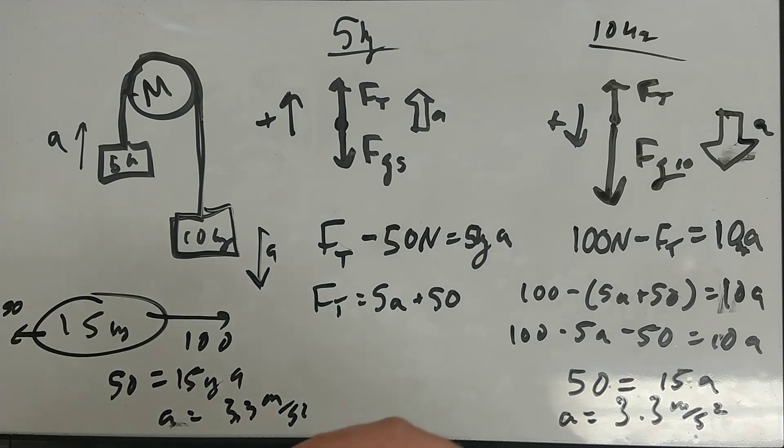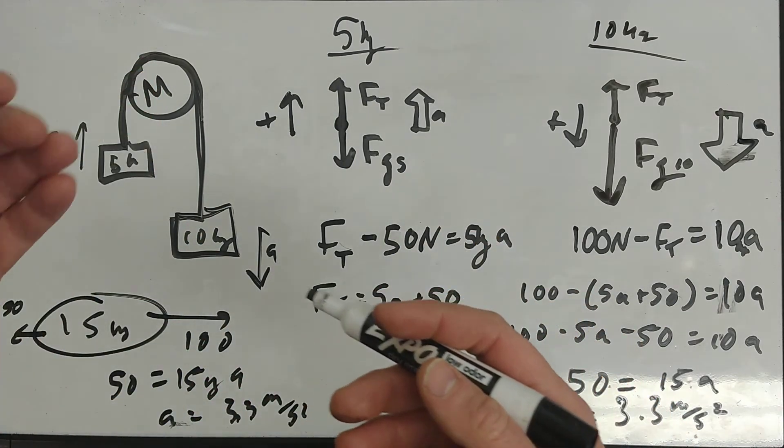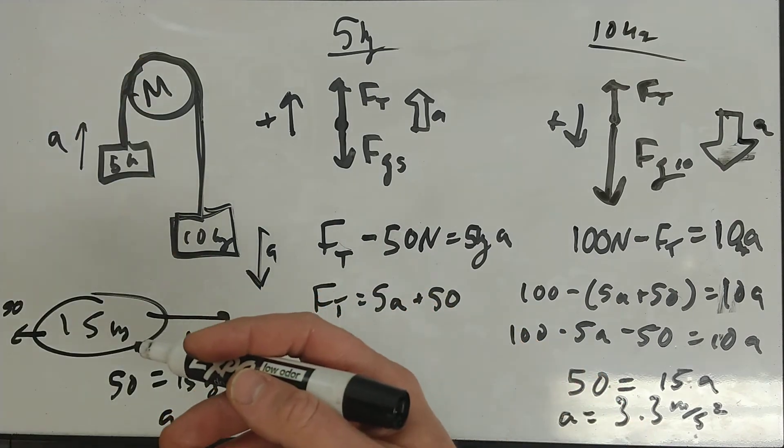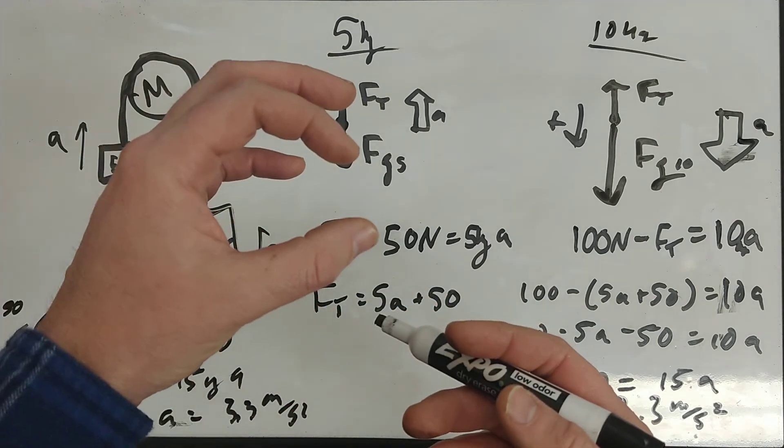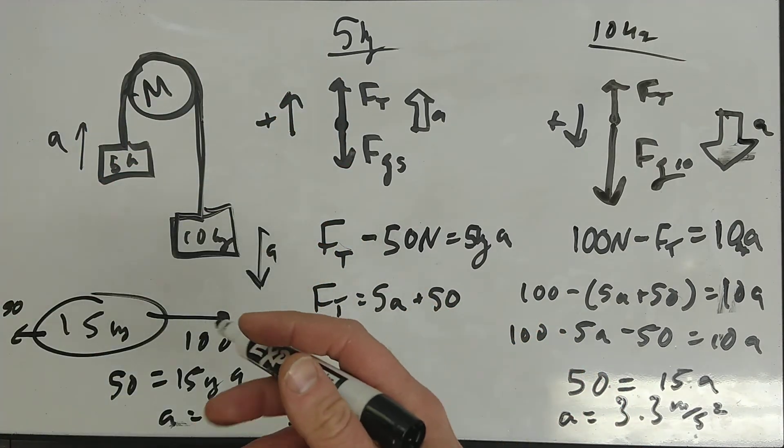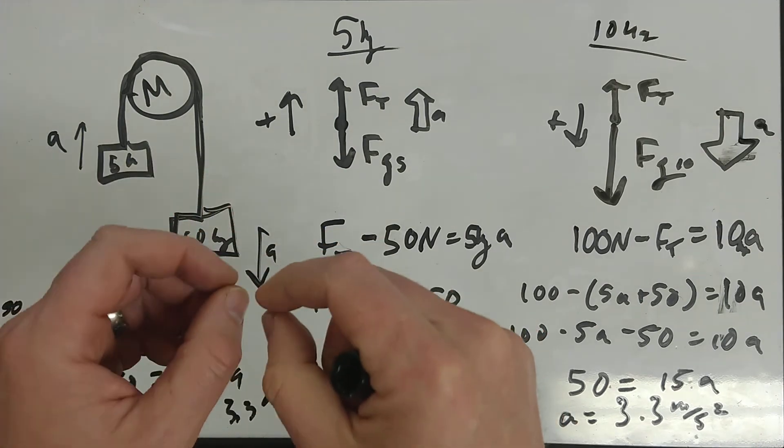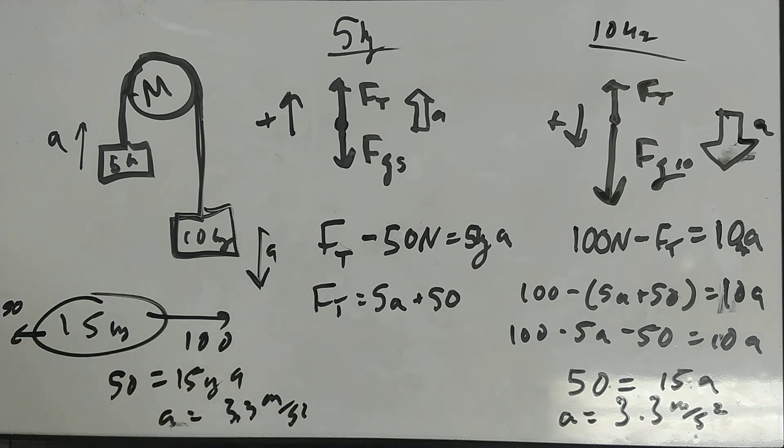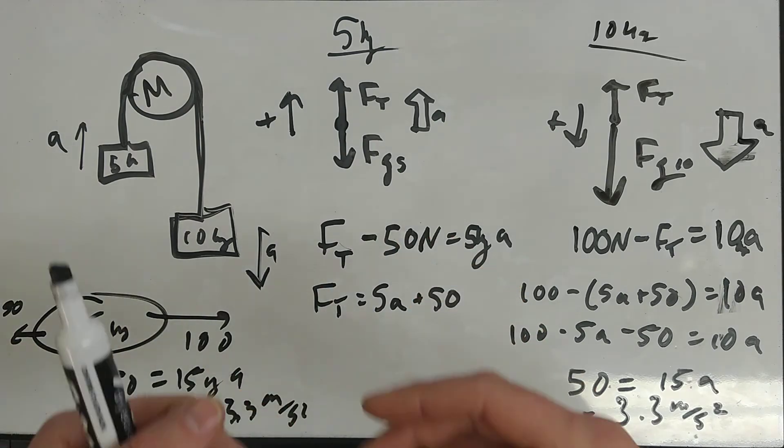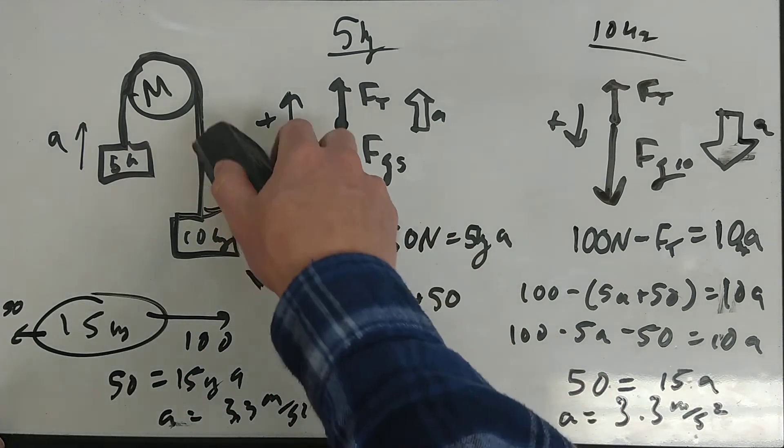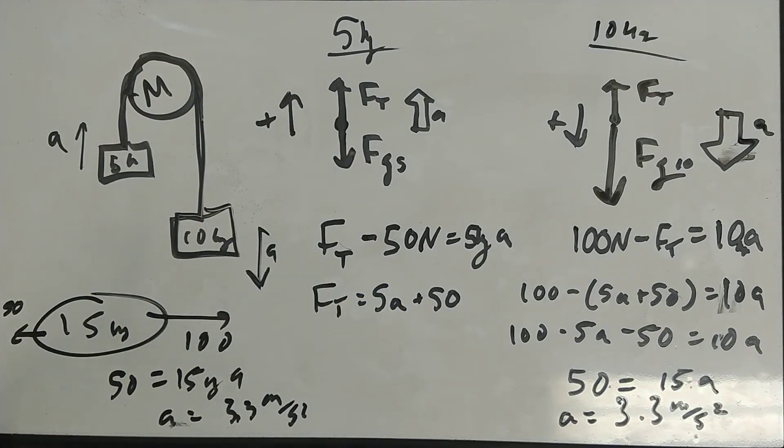So yes, pulleys try to minimize the friction. They try to minimize the mass. For instance, those little plastic pulleys I have in class that you've probably played with. You'll notice that they're very thin. The spokes are very small. They have a ball bearing. They're very nice. They spin very freely, very low friction. So how do we deal with it when we have a mass? All right. So here we go.